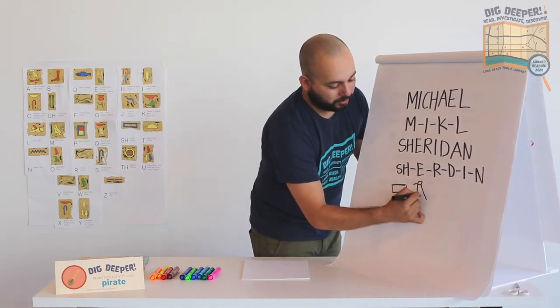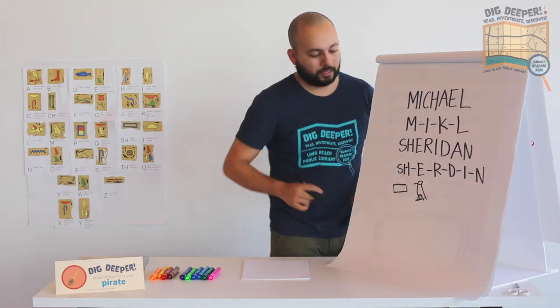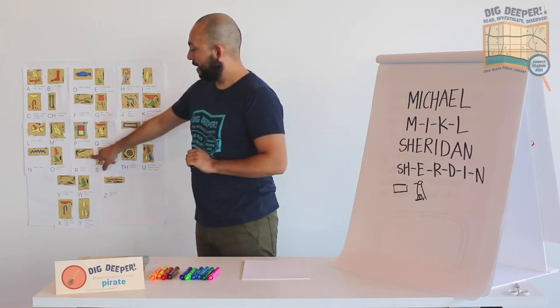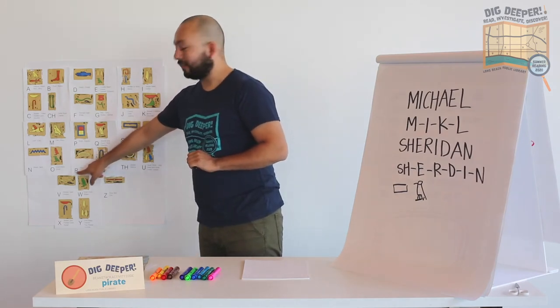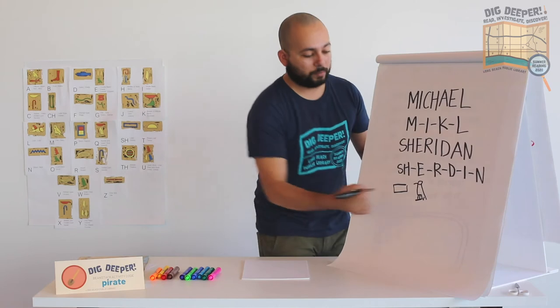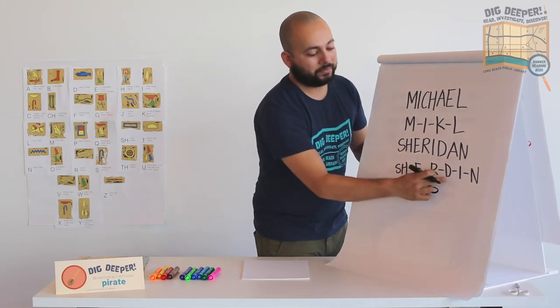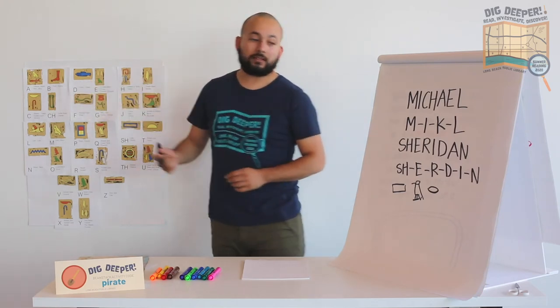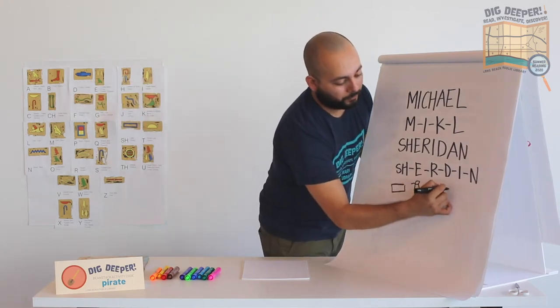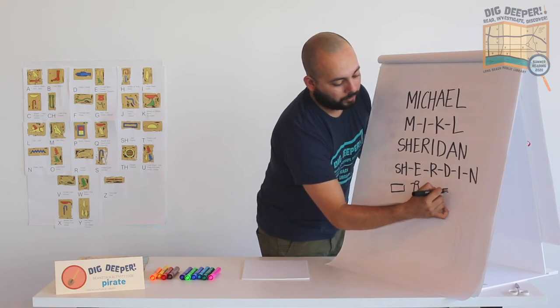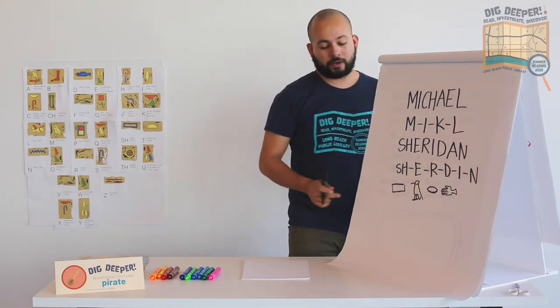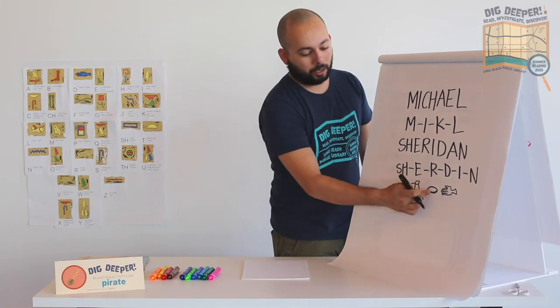Next up is the R symbol, the R. And here we have a mouth that represents the R sound. So I'm going to do a mouth there. Next we have the D sound. We have a hand that represents the D sound. If you haven't clicked on the link in the video description, it has all of these glyphs and stuff in much more detail, so you can actually follow along a little bit better. So, so far I've got SH, E, R, D.